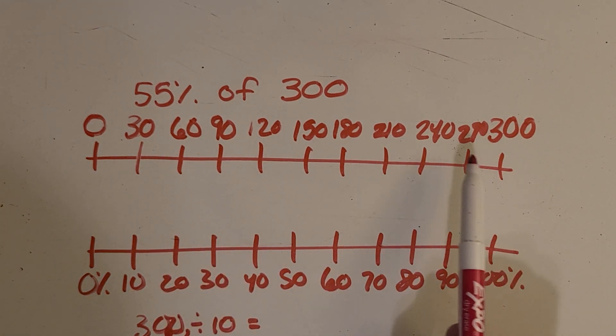All right, so we got it. If you do 270 plus 30 you get to 300 so we know we're correct.